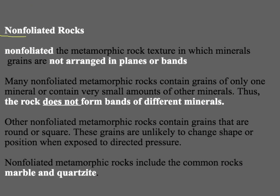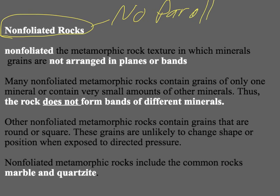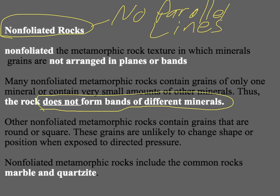The other type of metamorphic rocks are non-foliated rocks — no parallel lines. We don't see bands of different minerals. We might see swirls or lines, but they're not parallel. Many non-foliated rocks contain only one type of mineral, so you don't get distinct lines. The grains don't tend to change shape, so non-foliated rocks often have only round and square mineral grains with no change in shape or position. The main non-foliated metamorphic rocks are marble and quartzite.